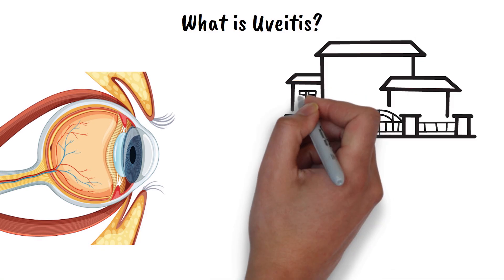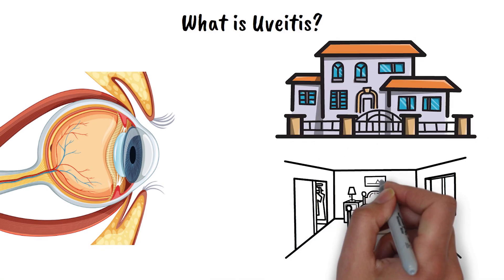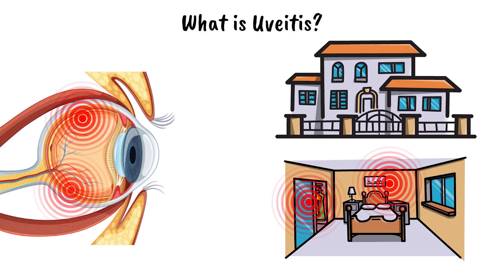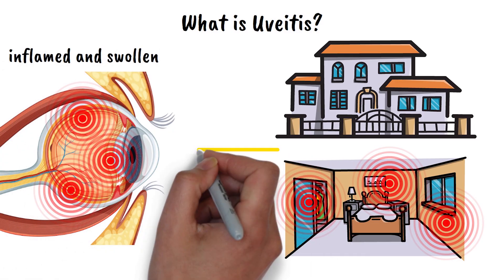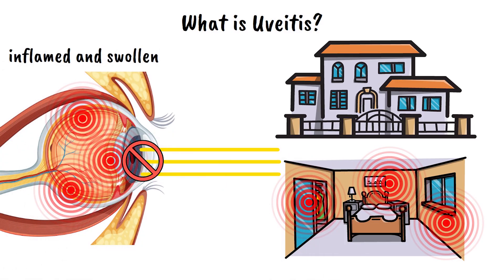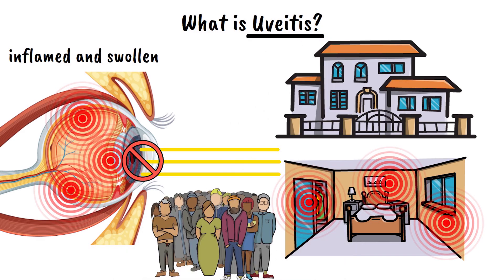Imagine your eye is like a beautiful house with many different rooms, each serving a specific purpose to keep everything running smoothly. What if one day the walls between these rooms started getting inflamed and swollen, making it difficult for light to pass through and causing pain throughout the entire structure? That's essentially what happens with uveitis, a serious eye condition that affects millions of people worldwide and can threaten your vision if left untreated.